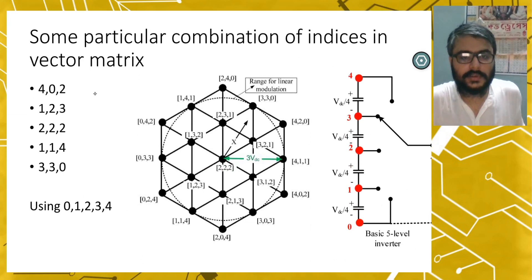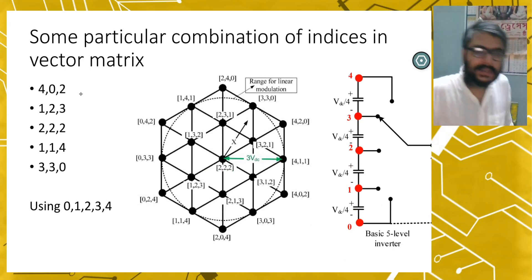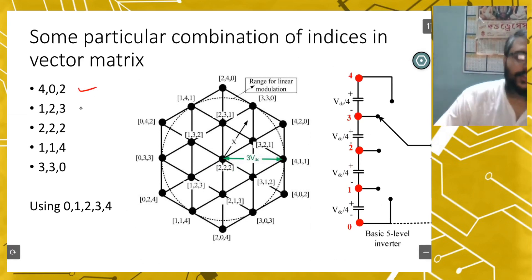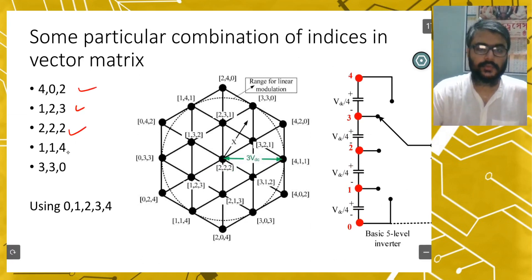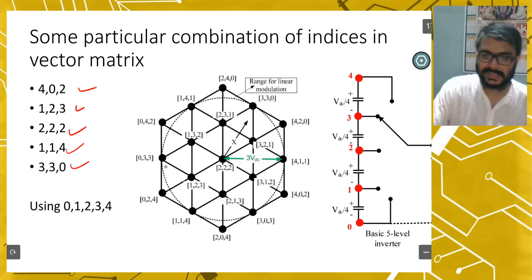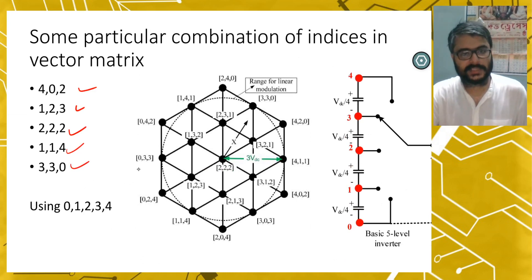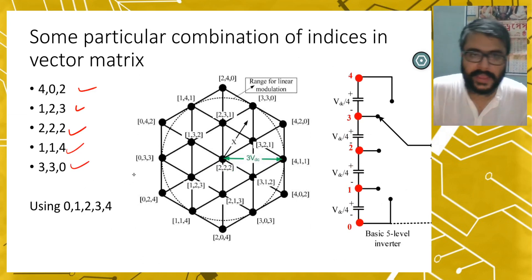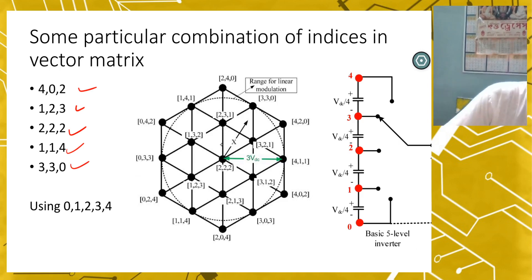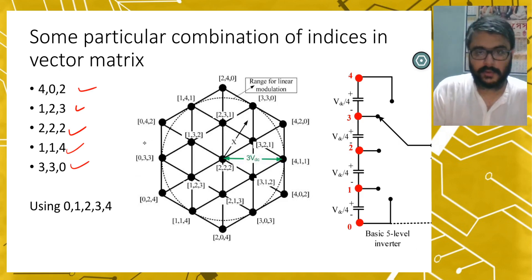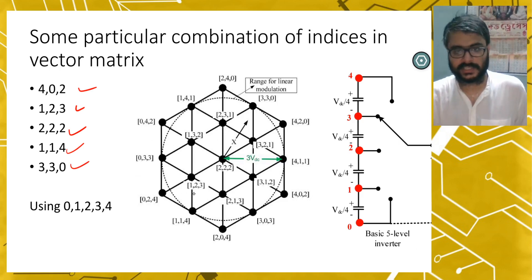The vectors used are: 4,0,2; 1,2,3; 2,2,2; 1,1,4; 3,3,0 and similar combinations where A plus B plus C equals 6. This is how you can use ZCMVSVM strategy and make the common mode voltage completely constant.